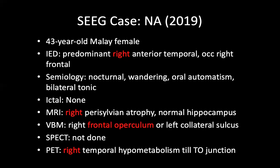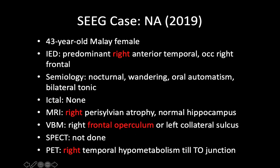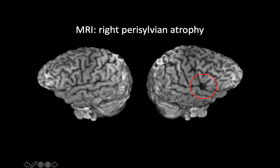Our first Malaysia SEEG case was in 2019: a 43-year-old Malay lady with right-sided anterior temporal interictal discharges, occasionally in the right frontal. Semiology was very much like temporal lobe epilepsy — occurring at night with wandering and oral automatism. No ictal recording was captured from scalp EEG. MRI showed right perisylvian atrophy, and PET scan showed right temporal hypometabolism. We were worried the seizures might be coming from the insula or frontal operculum rather than the temporal lobe, and there was also suspicious insular hypometabolism on the right side.